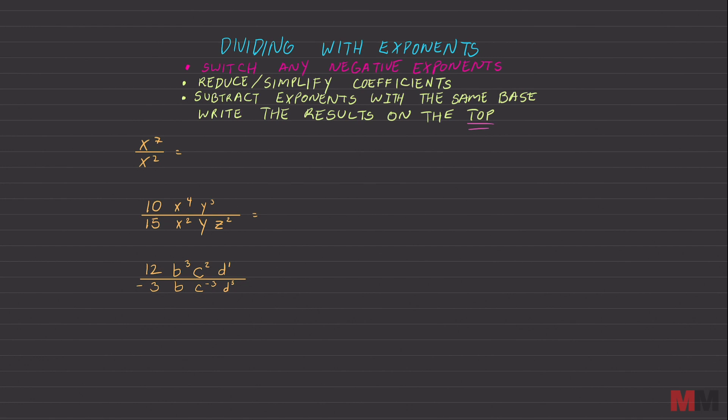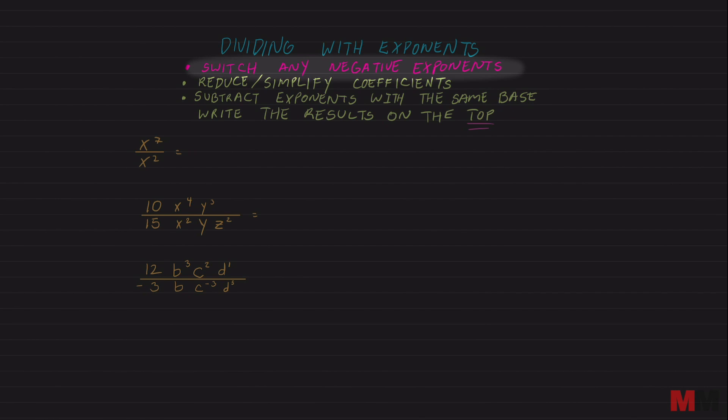I did write some rules on the top, so these are the three things you want to look for. One, switch any negative exponents. So if you see any negative exponents in the beginning, you can switch those out. Number two, reduce or simplify the coefficients in the front. So you're not subtracting those coefficients, they're just fractions. So like fractions, if you can simplify it and reduce it, do so.